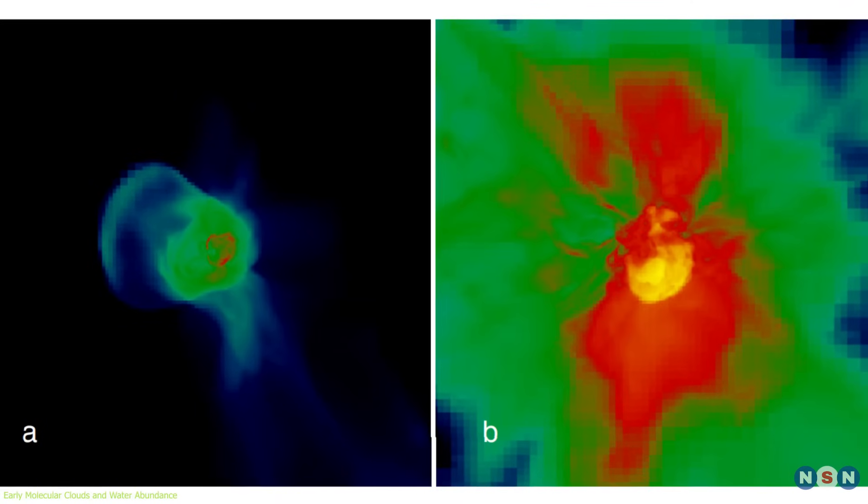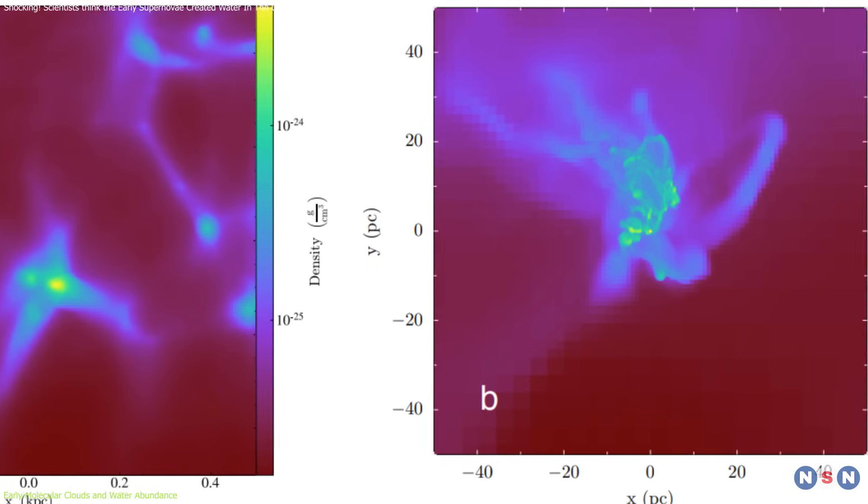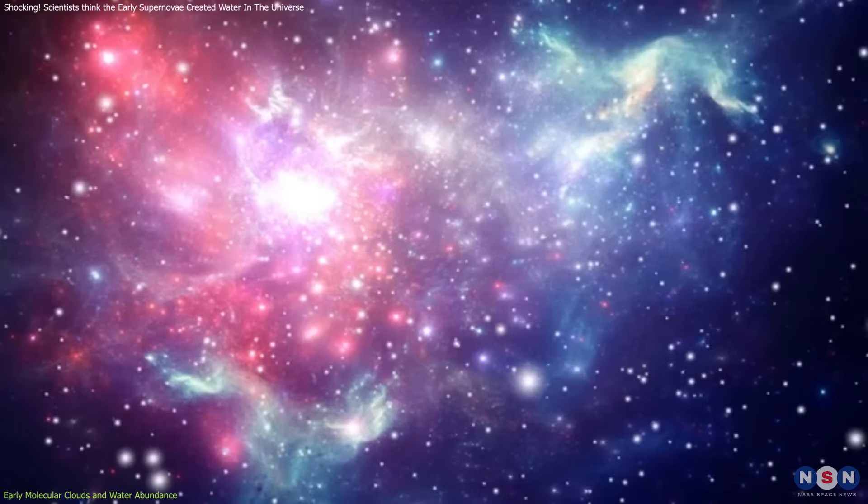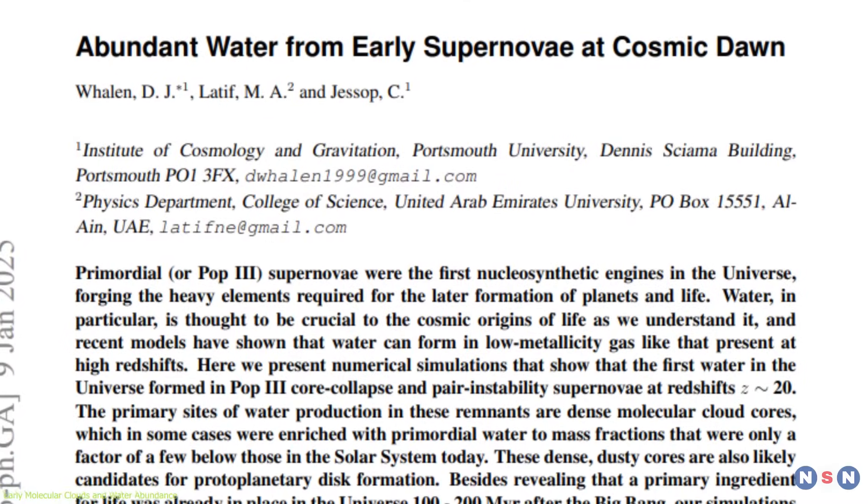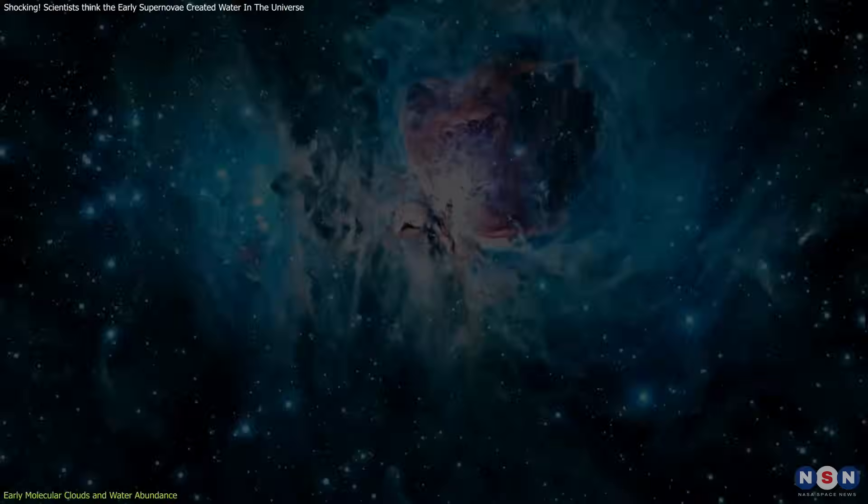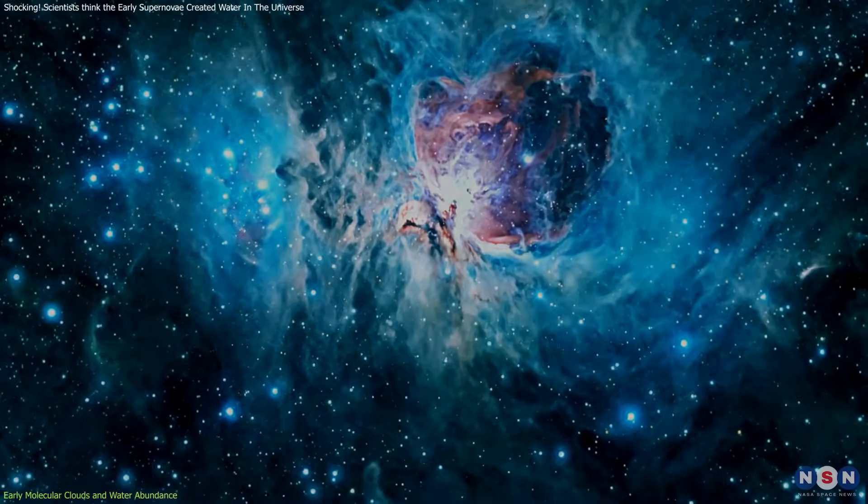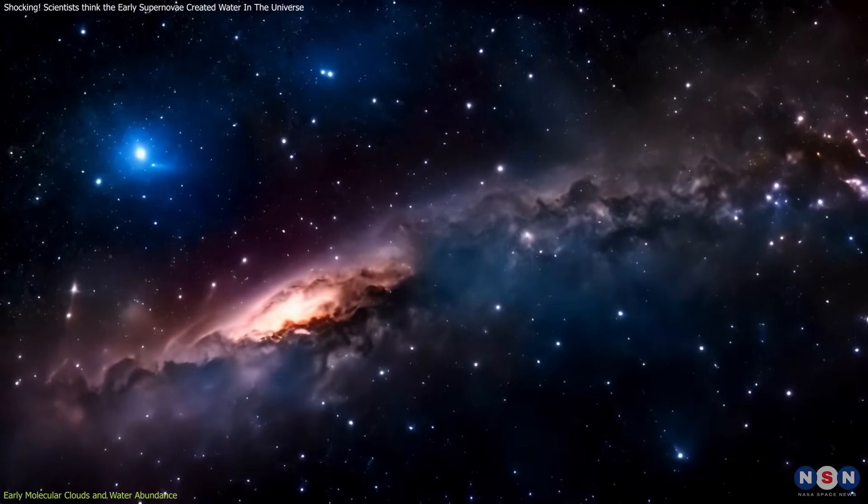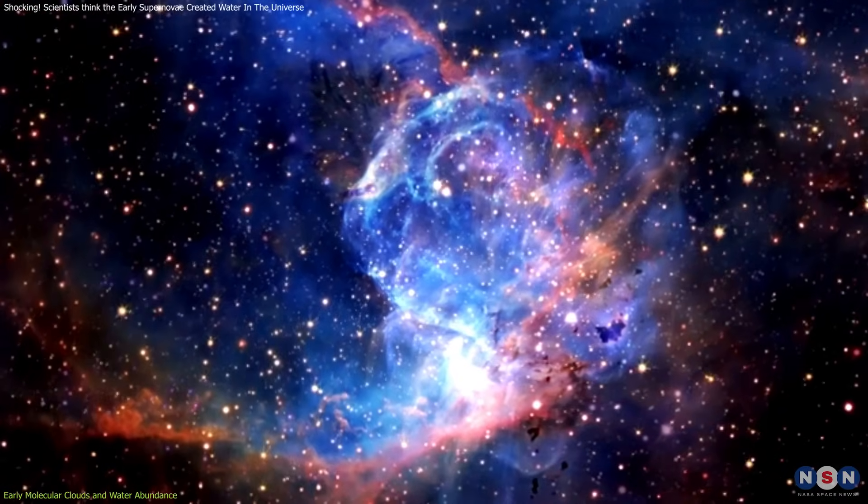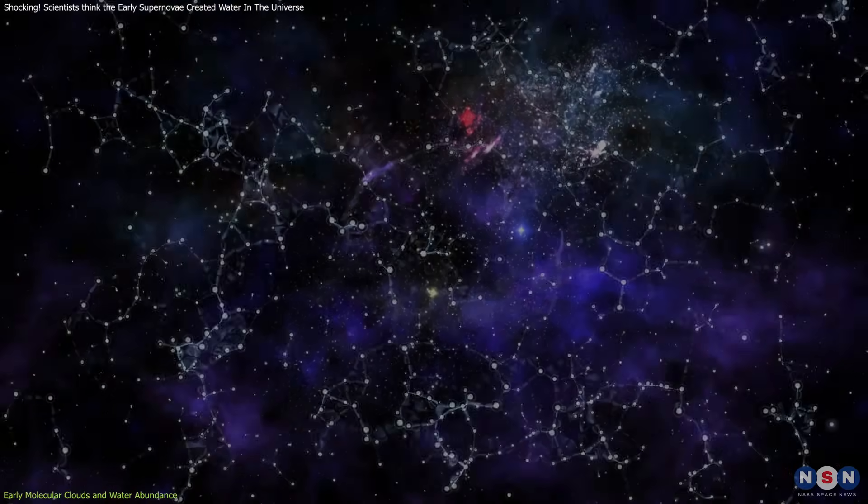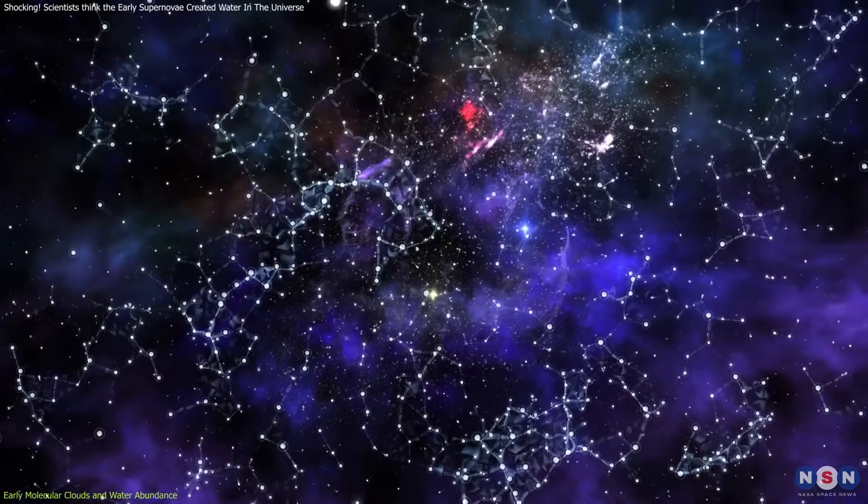Researchers modeled the explosions of both 13 solar mass and 200 solar mass Population III stars to understand the subsequent chemical enrichment. The findings revealed that the remnants of these supernovae led to molecular clouds with water fractions significantly higher than those observed in the Milky Way today. Specifically, these early molecular clouds contained 10 to 30 times more water, indicating a surprisingly water-rich environment in the universe's infancy.